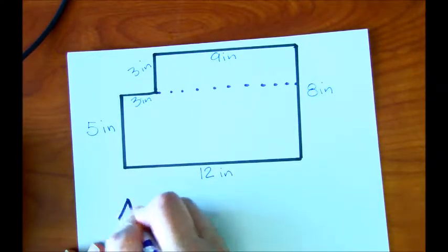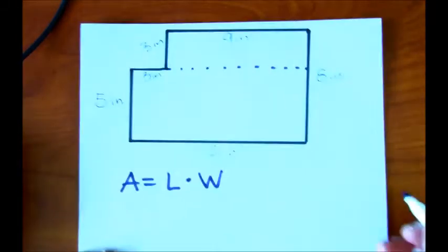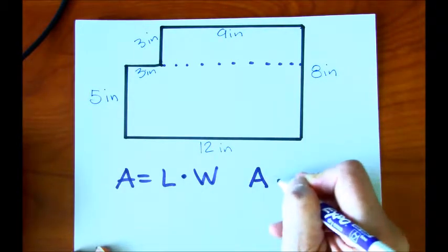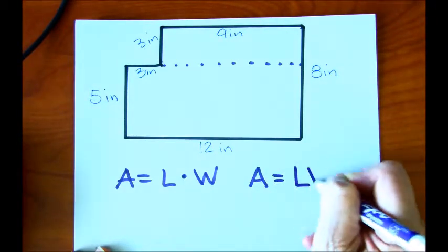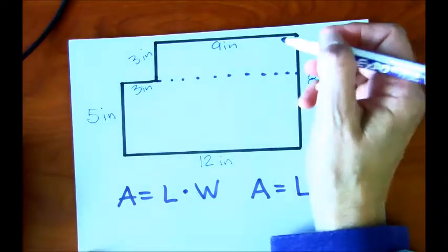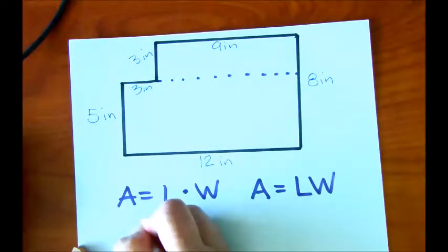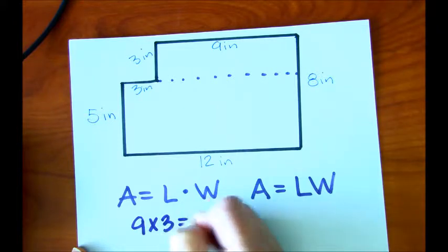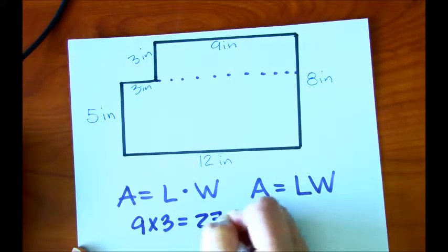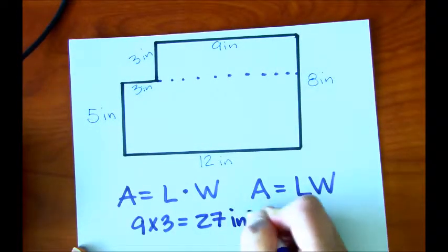And remember, area of a rectangle is length times width. Sometimes you'll see it without the dot. It'll just be LW. When you have two letters together like that, you can assume that the operation is multiplication. So in this first example, this is going to be 9 times 3. So 9 times 3, that's going to give us 27. Now, the unit of measurement we're using here is inches, so that's going to be inches squared.